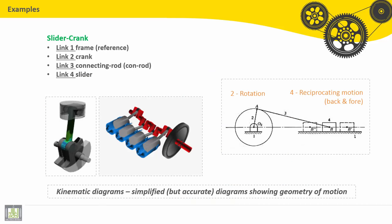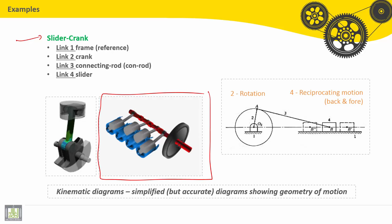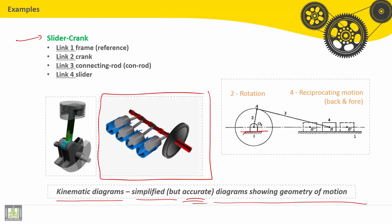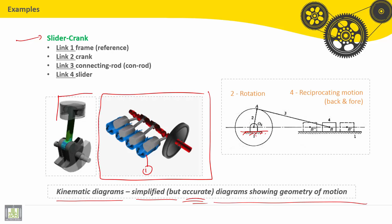Another example: the slider crank. It is the mechanism used in car engines. Here, the kinematic diagram is simplified, accurate, and shows the geometry of motion. Here we have the ground — part number one, which is the cylinder.